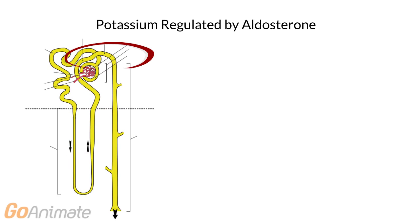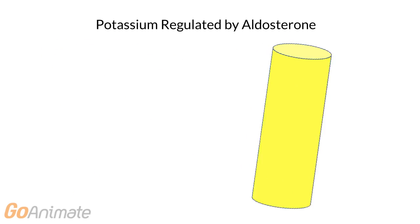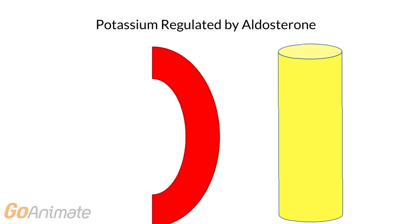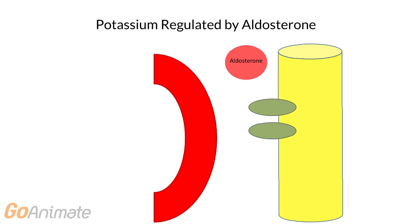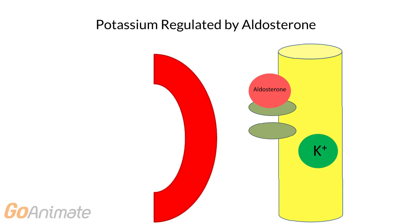Aldosterone has an effect on the kidney, specifically the distal convoluted tubules and collecting ducts located in the nephron. Cells in the tubules and collecting ducts respond to aldosterone, causing an increase in sodium reabsorption and potassium secretion. This lowers plasma potassium.